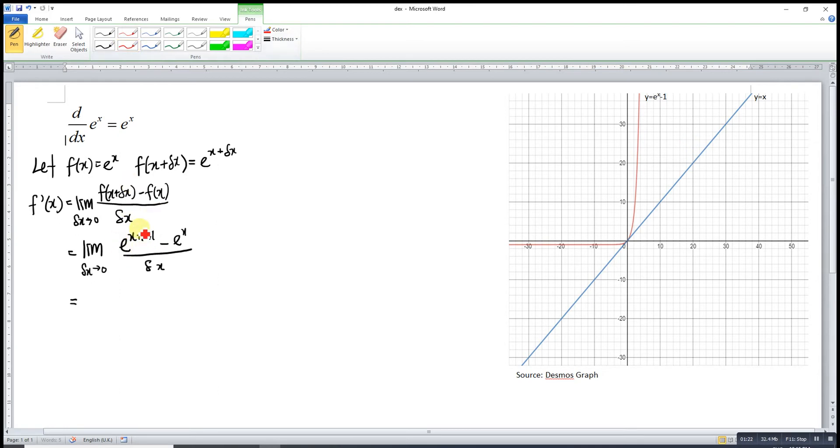We just simplify the function first. So according to the law of indices, e to the power of x plus delta x is actually e^x times e^(delta x). So our variable is delta x. So others means constant. So we just take out or factorize out.